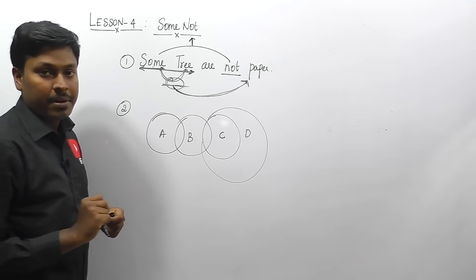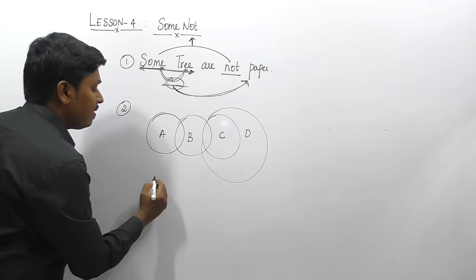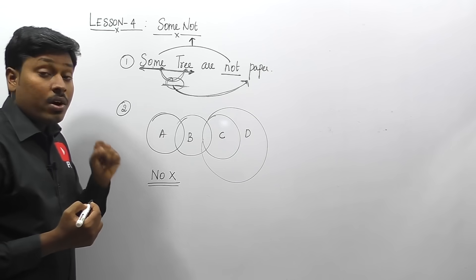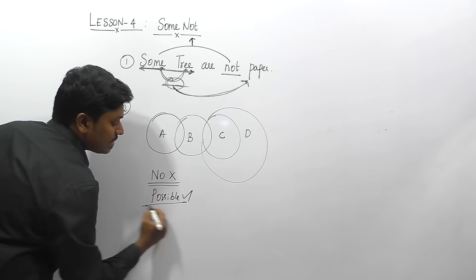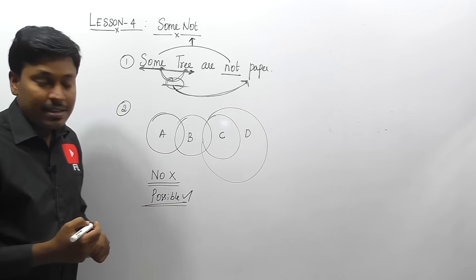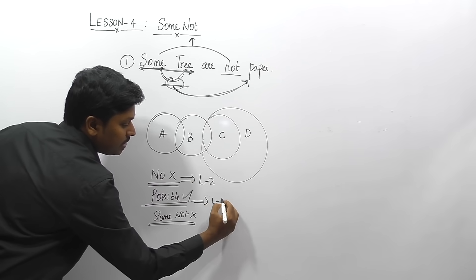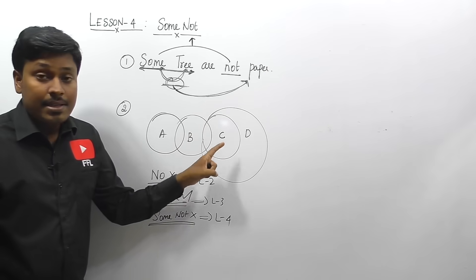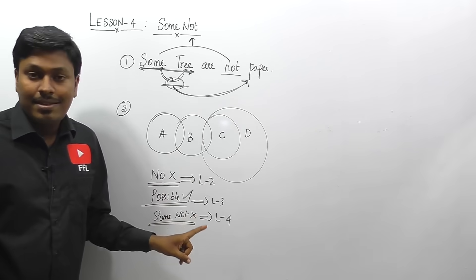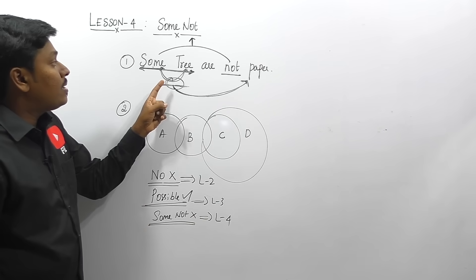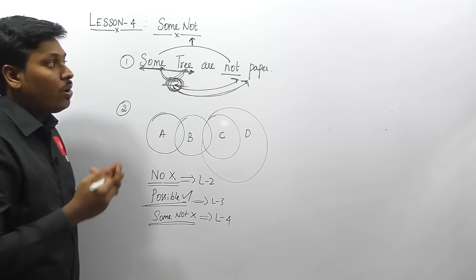The second important concept: in lesson two, if all parameters are inside a single Venn diagram, 'no conclusion' is false. In lesson three, if all parameters are inside a single Venn diagram, 'possibility' is true. In lesson four, if all parameters are inside a single Venn diagram, 'some not' is always false. So: single Venn diagram — no conclusion false, possibility true, some not false.